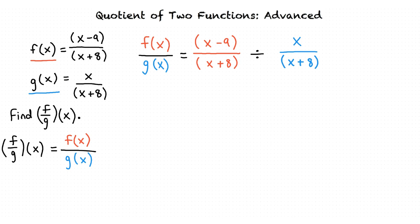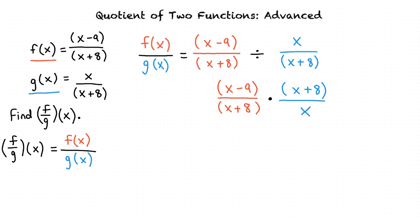Whenever we divide by a fraction, instead we multiply by the reciprocal of that fraction. The reciprocal of a fraction can be found by switching the numerator and the denominator of the fraction. So the reciprocal of x divided by x plus 8 would be x plus 8 divided by x. After multiplying by the reciprocal, we have x minus 9 divided by x plus 8, times x plus 8 divided by x.